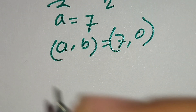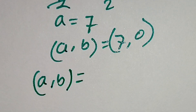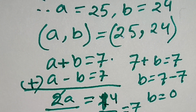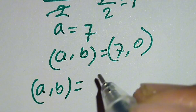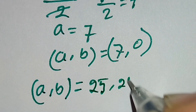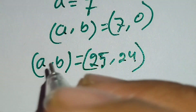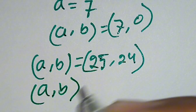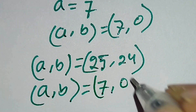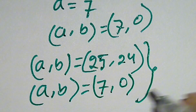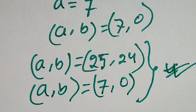From the two cases we get: from the first case, a comma b equals 25 comma 24, and from the second case, a comma b equals 7 comma 0. Both values are correct. Thanks for watching the video — please like, comment, share, and subscribe.